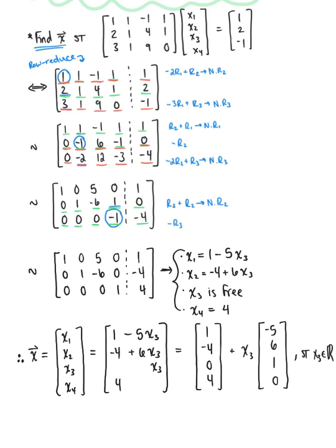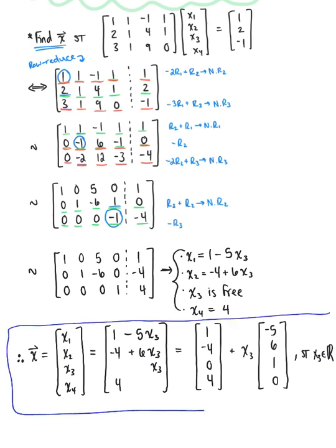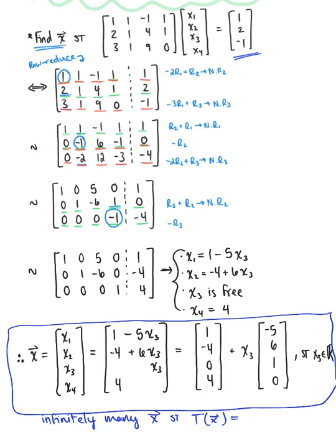So this is our solution. There are infinitely many vectors x such that the image under T equals (1, 2, -1) — one for each value of the free variable x₃.